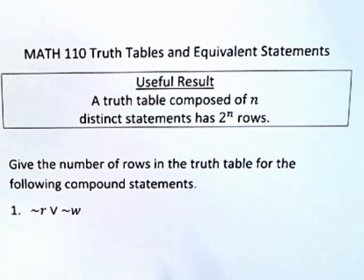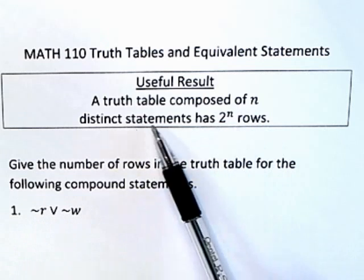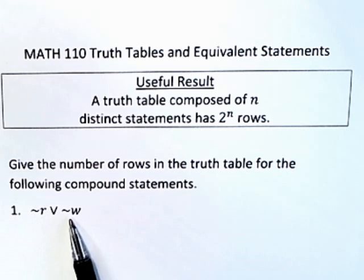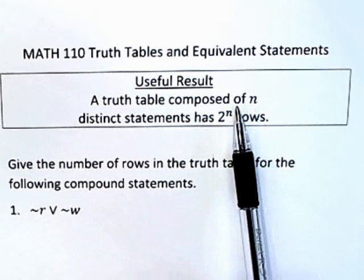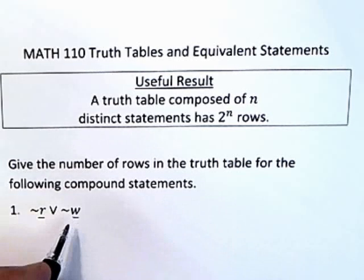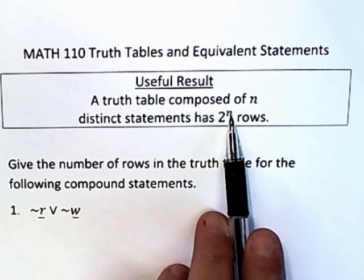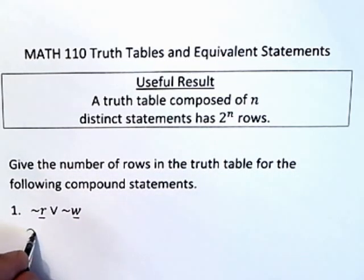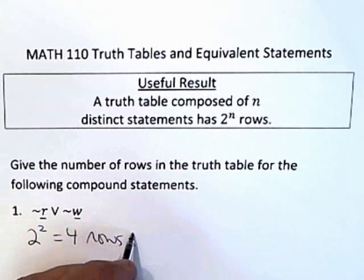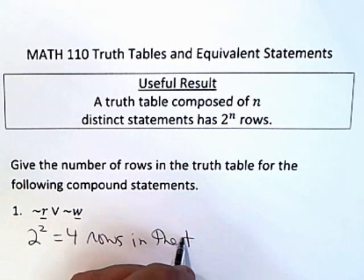Suppose you give the number of rows of the truth table for the statement ¬r ∨ ¬w. It says a truth table with n distinct statements - there are actually two distinct statements here. n is two here, so there would be 2^2. Since there are two statements, r and w, you would write 2^2, which is four rows in the associated truth table.